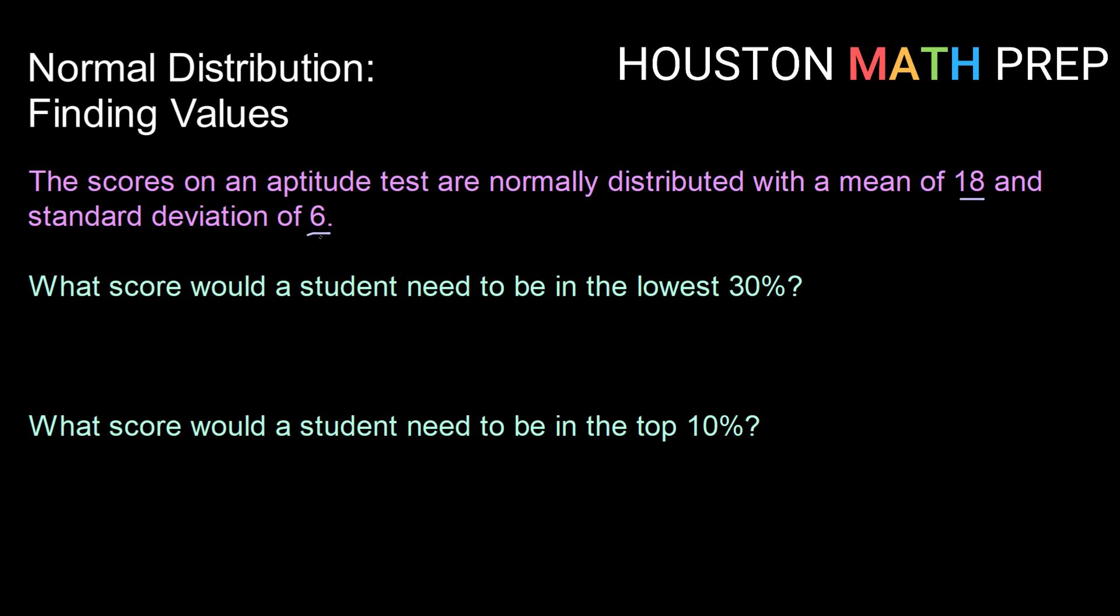What score would a student need to be in the lowest 30% of scores? So with these questions, I highly encourage you to draw yourself a little normal distribution picture and sketch what's going on.